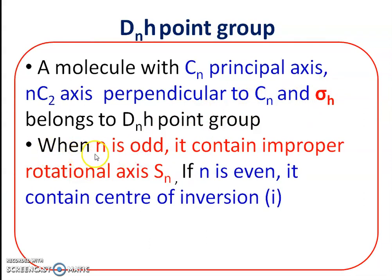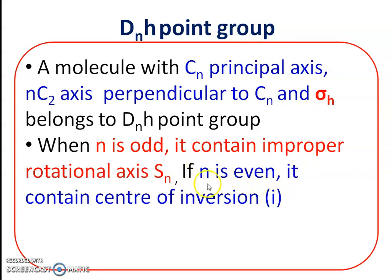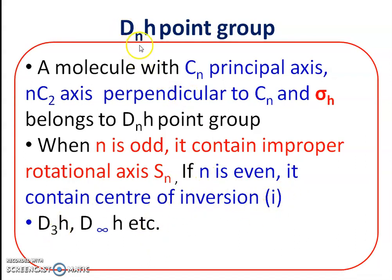If the value of n in Cn is odd — such as 1, 3, 5 — the molecule may contain an improper rotational axis Sn. If the value of n is even — such as 2, 4 — the molecule may contain a center of inversion, i. Examples of DnH point groups are D3H and D∞H.